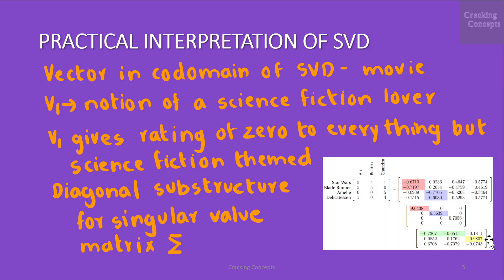An idealized science fiction lover is a purist and only loves science fiction movies. So, a science fiction lover V_1 gives a rating of 0 to everything else other than the science fiction movies. This logic is implied in the diagonal substructure for the singular value matrix σ. A specific movie is therefore represented by how it decomposes linearly into its stereotypical movies. Likewise, a person would be represented by how they decompose via linear combination into movie themes.